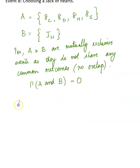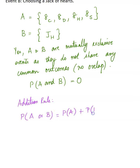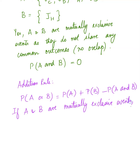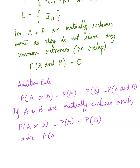We saw in the addition rule that probability of A or B is probability of A plus probability of B minus probability of A and B. This was assuming that A and B were not mutually exclusive. But if A and B are mutually exclusive events, then the formula reduces to simply probability of A plus probability of B, since probability of A and B would now be 0.